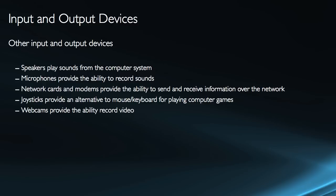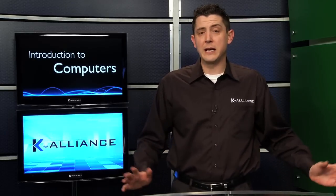Network cards and modems provide the ability to send and receive information over the network. Joysticks are another input device — an alternative to the mouse and keyboard, but specifically for playing computer games. Webcams are another input device for recording video and possibly audio if a microphone is built in. There are a lot of input-output devices, but the point is we need these devices to tell the computer what we want it to do, and to show us what the computer is doing. Collectively, all of these devices are peripheral components, and in the next section we'll look at some additional ones.